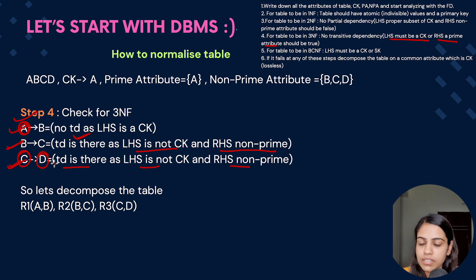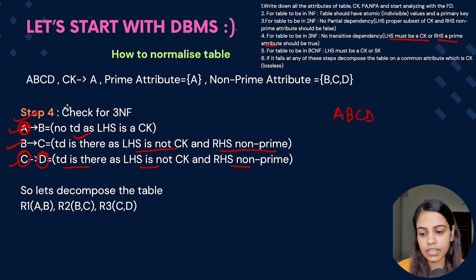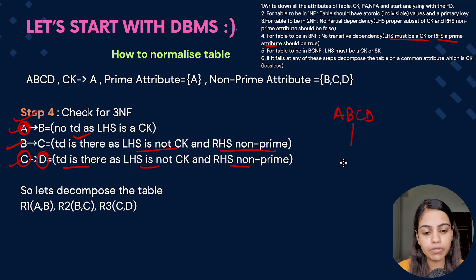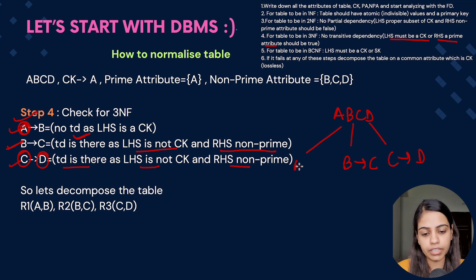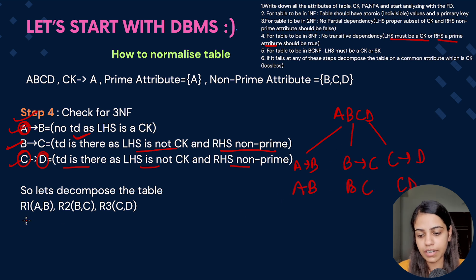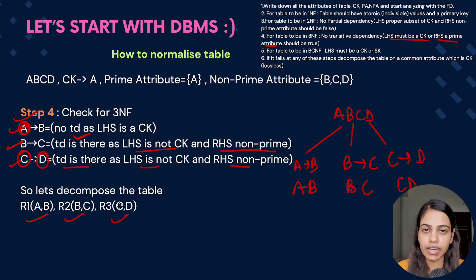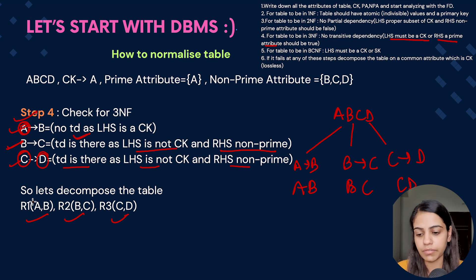We have to decompose table ABCD into three tables because there are two functional dependencies with transitive dependency. The decomposition is: AB (from A determines B), BC (from B determines C), and CD (from C determines D). So the relation is divided into R1 = AB, R2 = BC, and R3 = CD. BC and CD were having transitive dependency before decomposition, while AB was not.